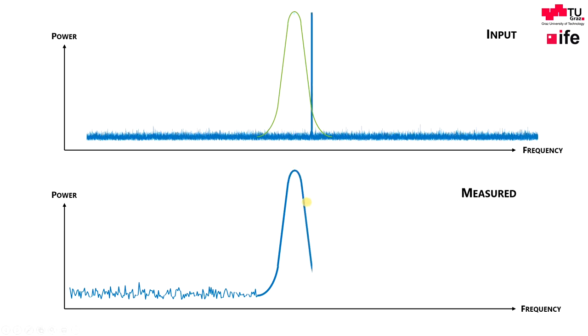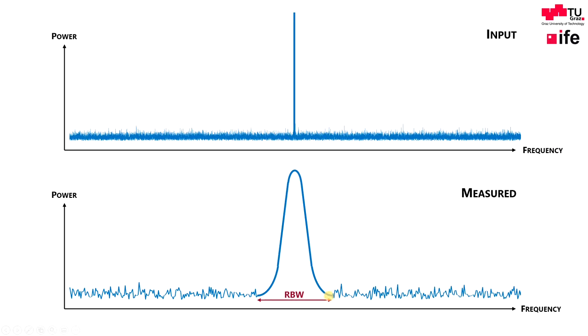The peak is measured when the filter bandwidth is exactly in the middle of our input frequency. After that, less power is within the filter bandwidth and therefore the value decreases. After the sweep has finished, we can see the shape of our filter on the display.